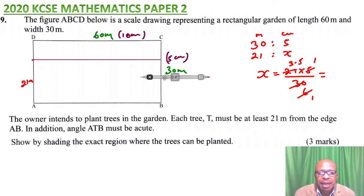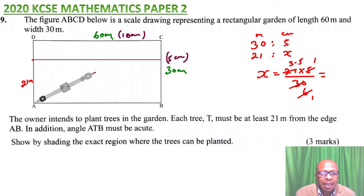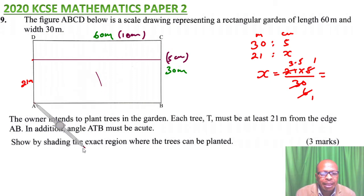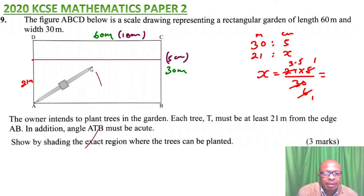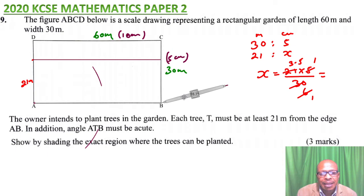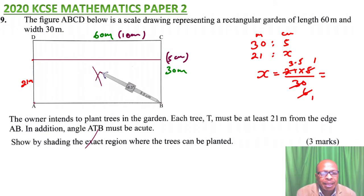Use your compass to make two arcs — one on this side and one on the other side of AB. We are bisecting AB so that we can find the center. Take your compass to the other side and make the corresponding arcs.